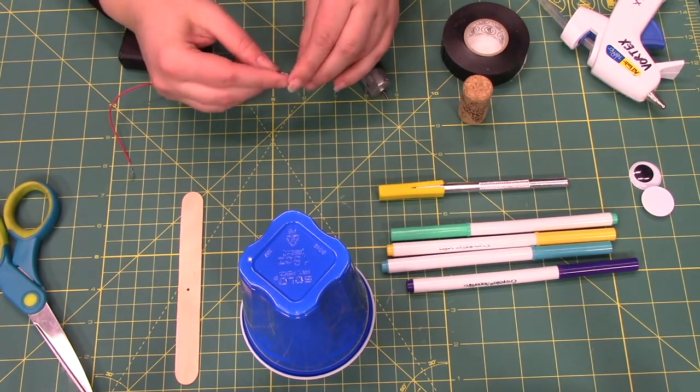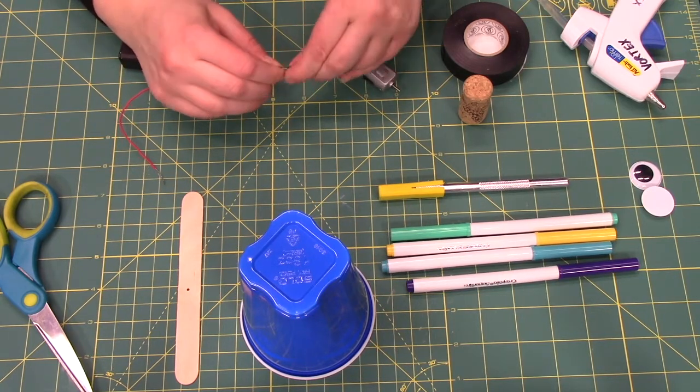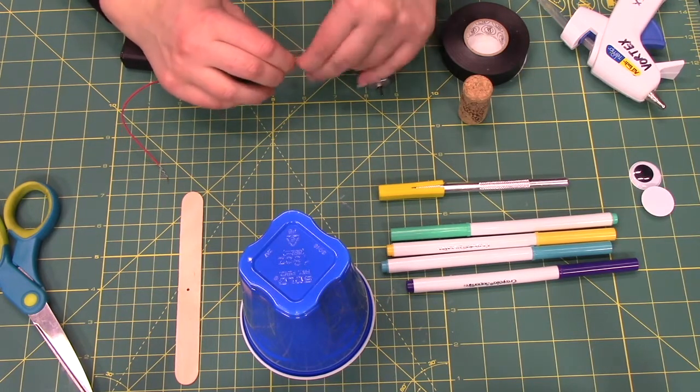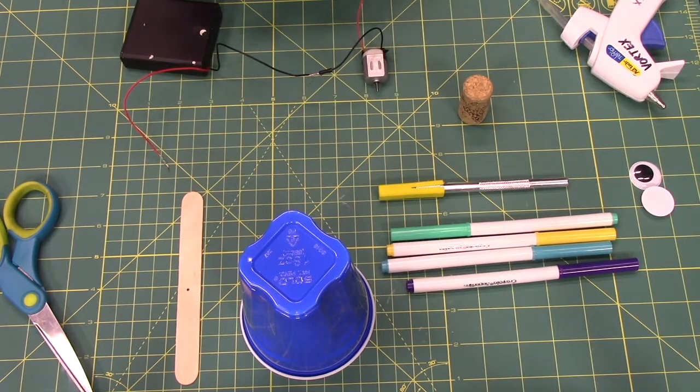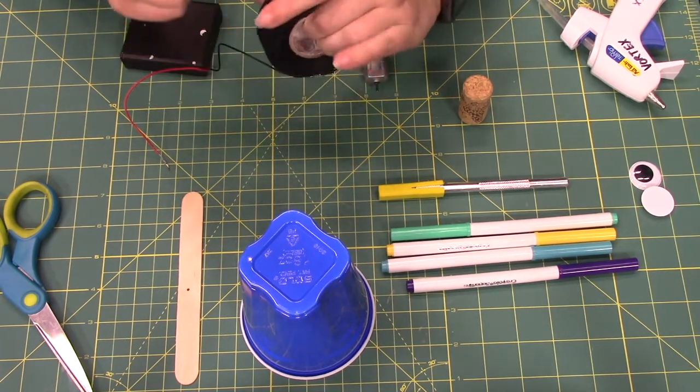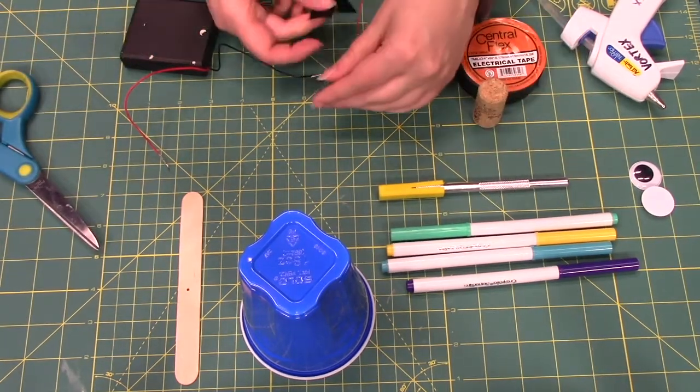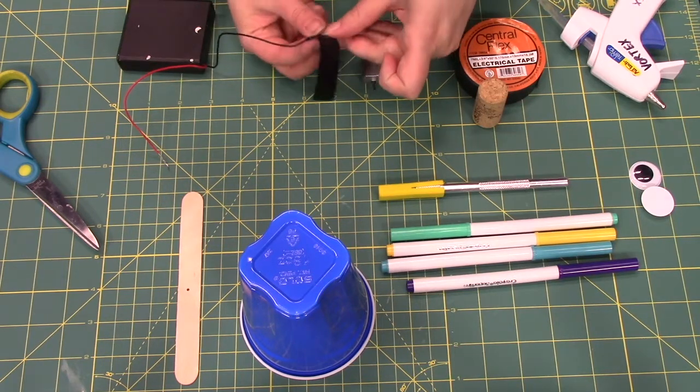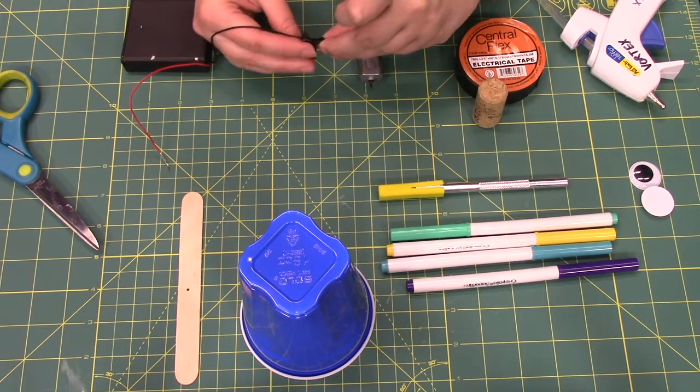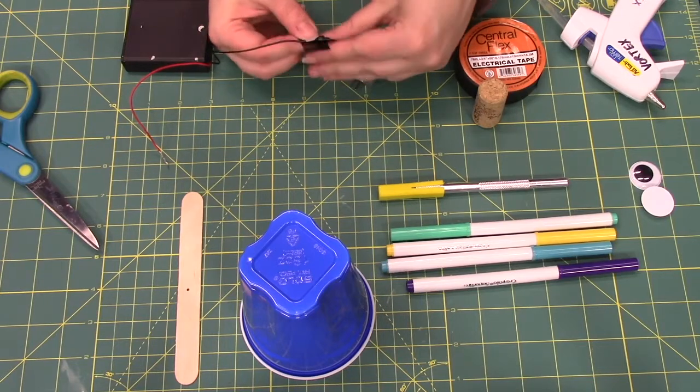So what I'm going to do is actually wrap this wire around the lead and then I'm going to use a little bit of electrical tape to secure it. I'm just going to put enough on here to make sure that it won't slip off during use and that it has a good connection.